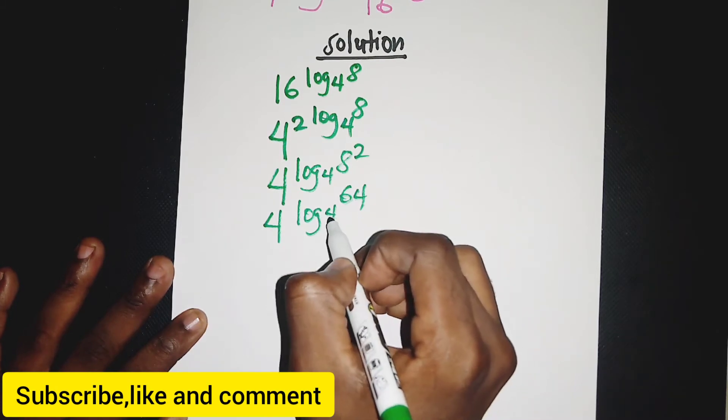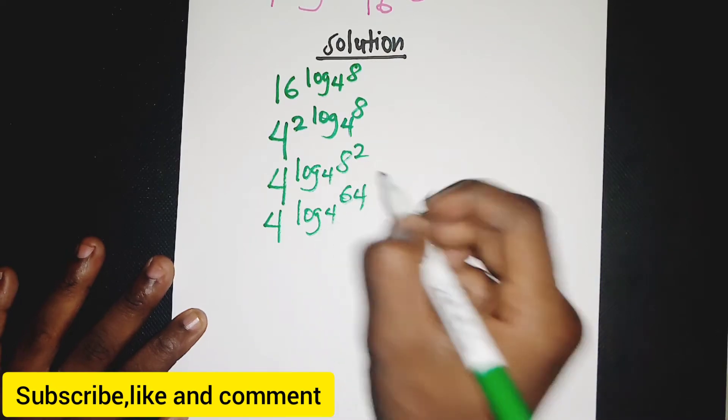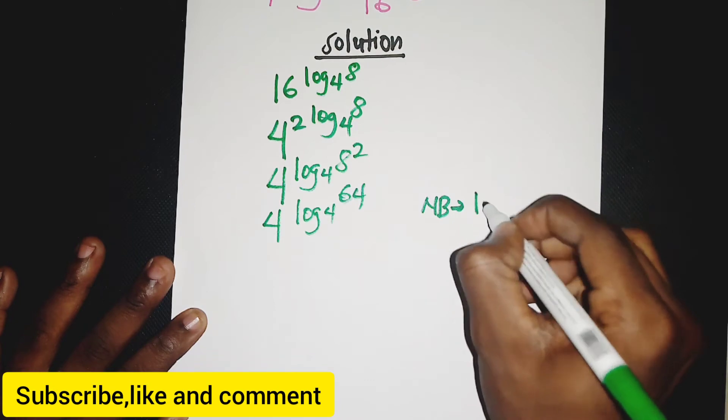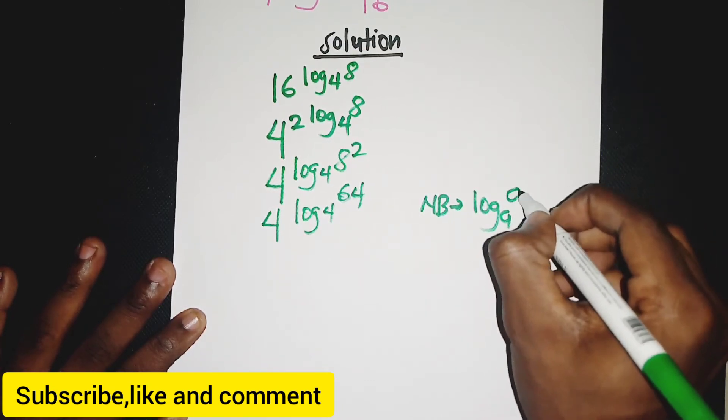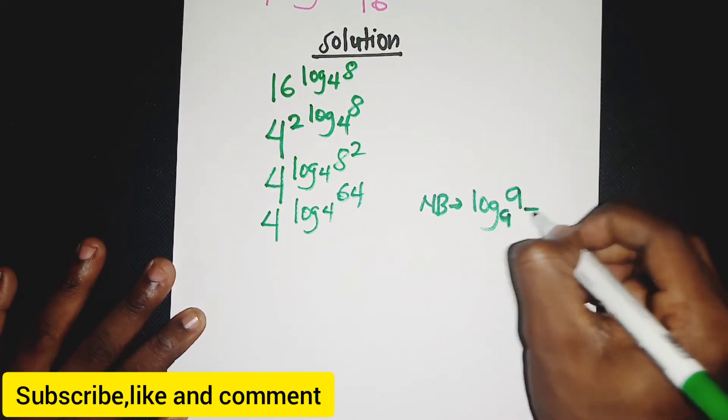One property of logarithm is that if you have log base a of a, where you have the same value here and the same value here, it is equal to 1. So we want to make 4 to the power something.